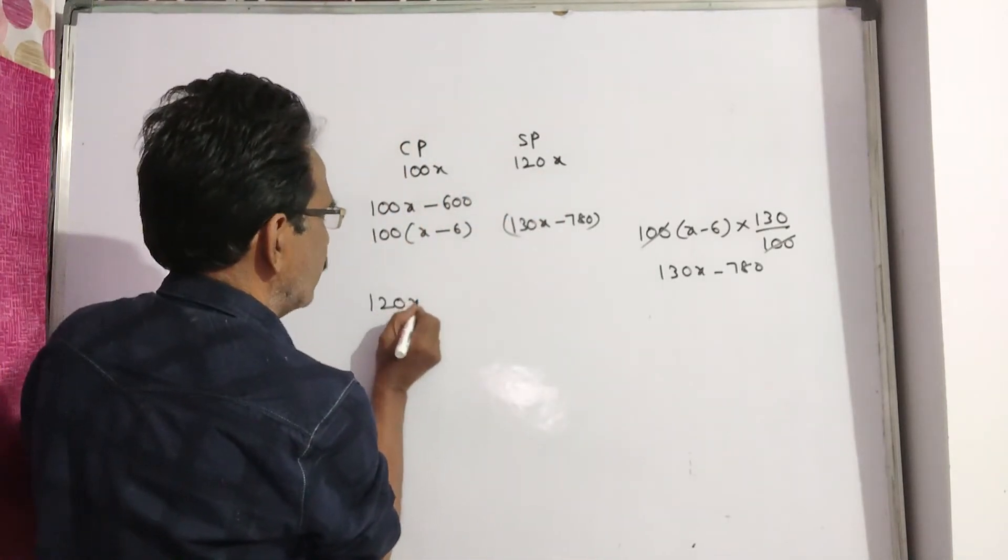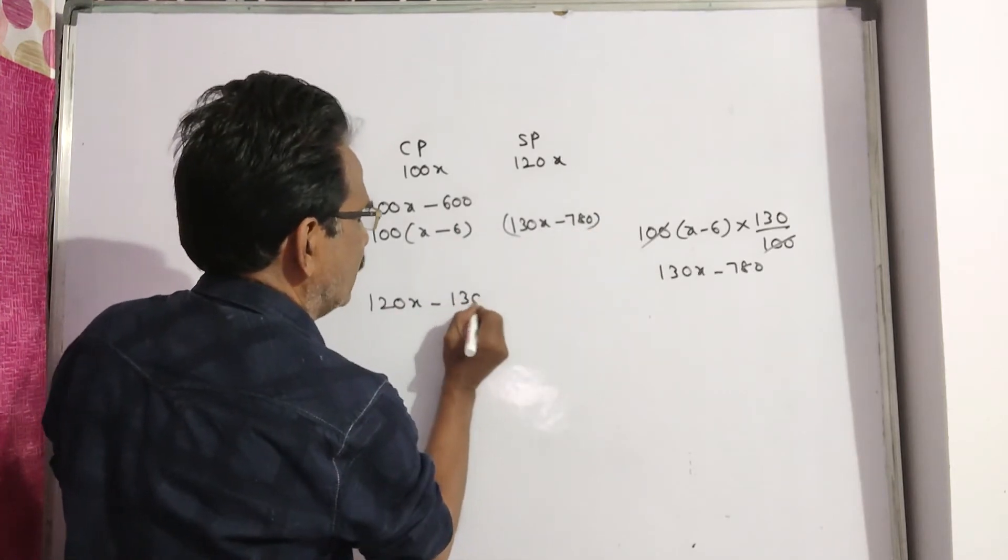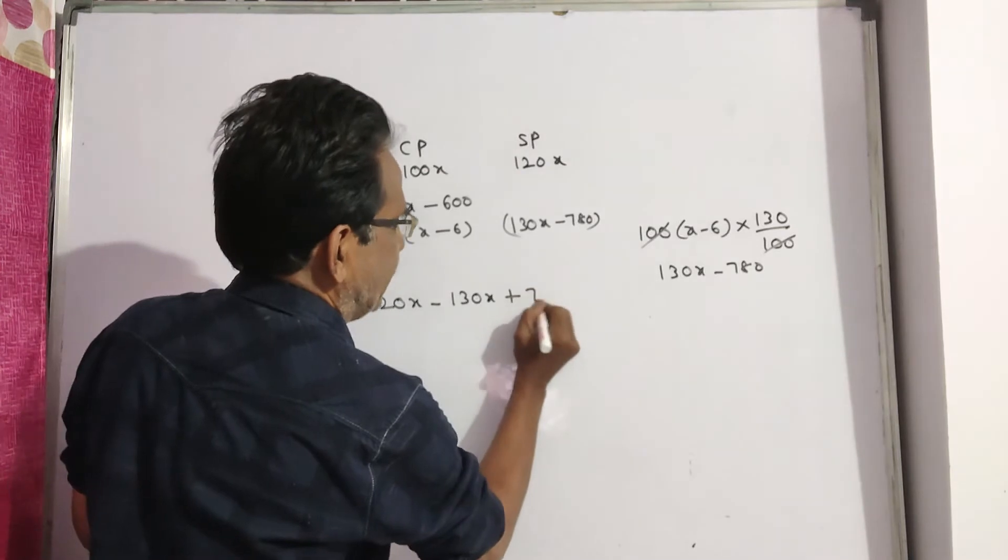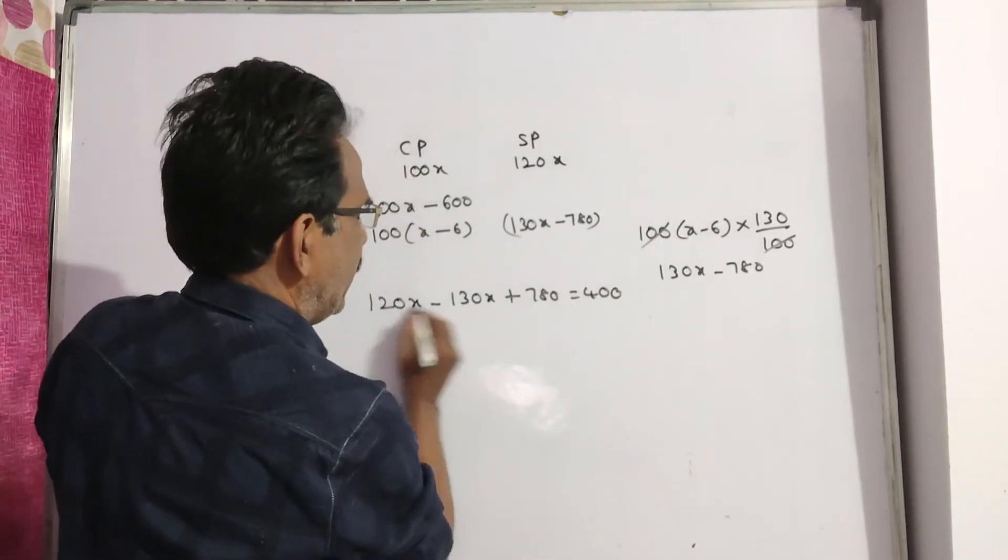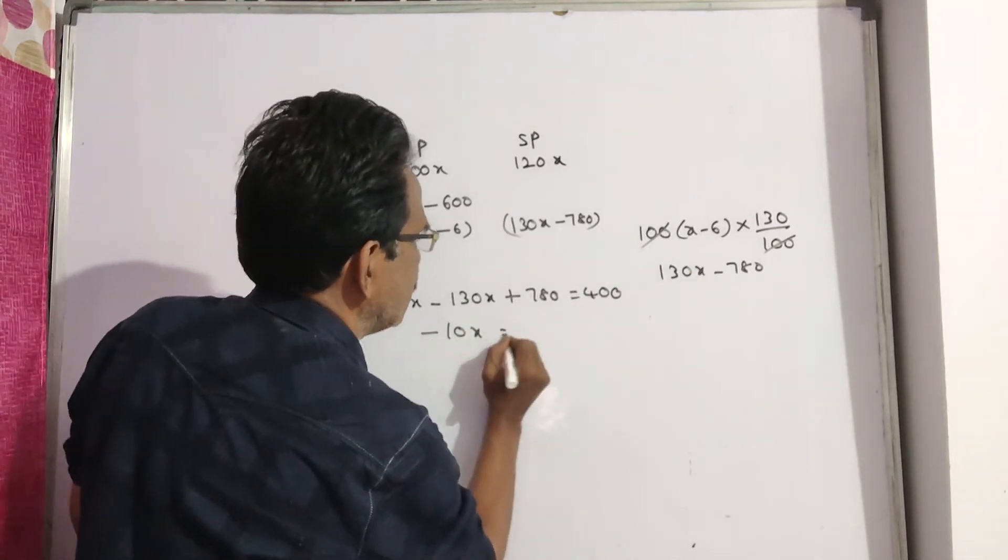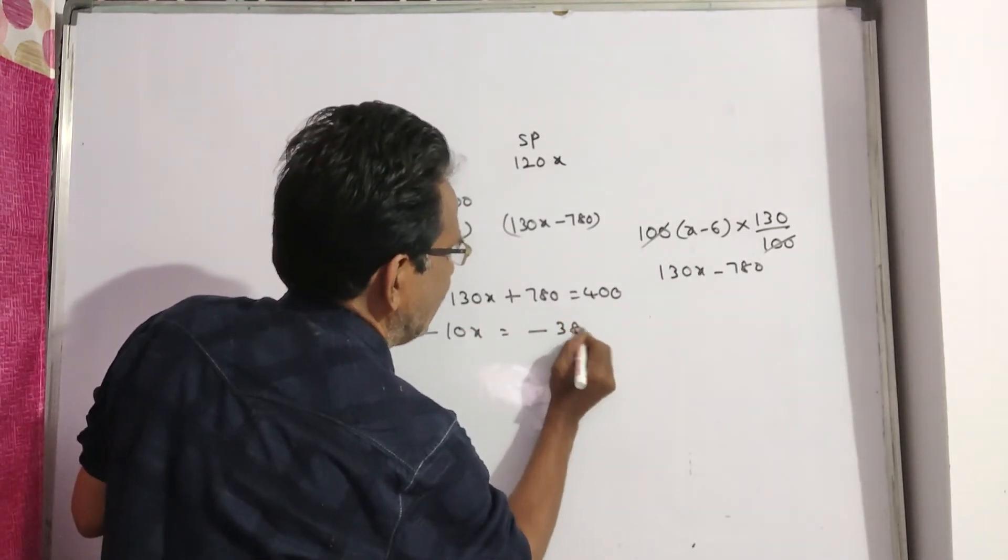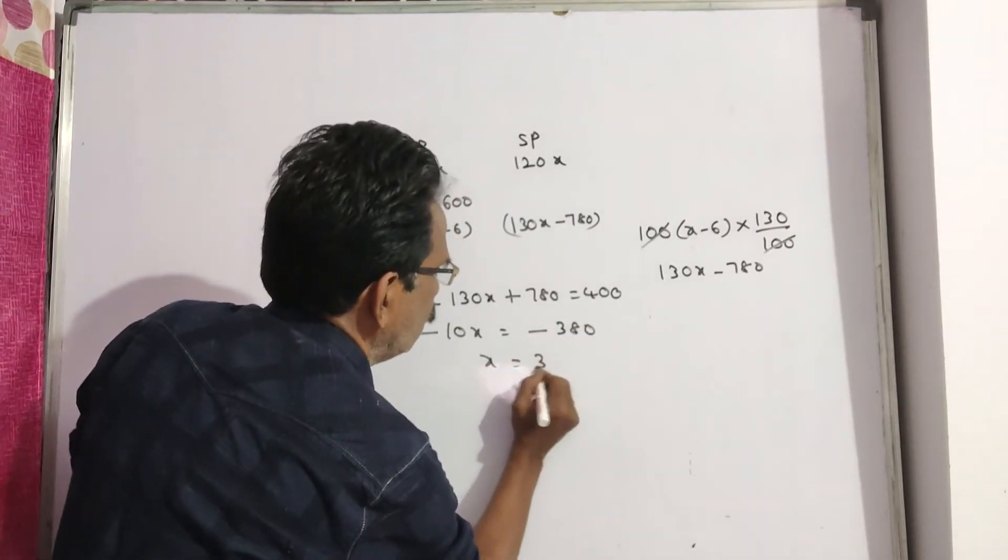120x minus of 130x minus 780 means minus 130x plus 780 is equal to 400. Minus 10x. So 10x is equal to 380. x is equal to 38.